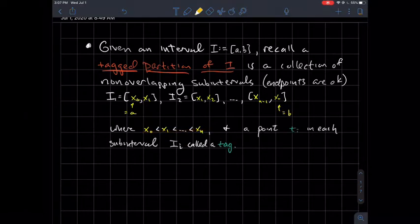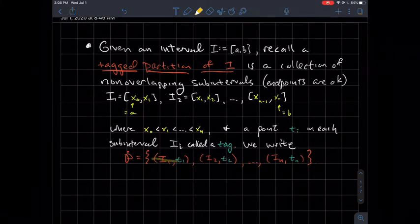The other part of being a tagged partition is we should have what are called tags. A tag is a point we'll denote by ti, so you pick a point in each one of these subintervals ii. When we have these two things together, subinterval with the tag in that interval, we usually denote that as an ordered pair, like i1, t1. And then the collection of all those subintervals with their tags is called a tagged partition.